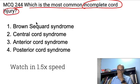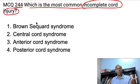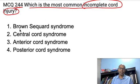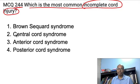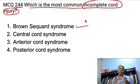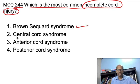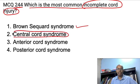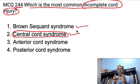We all know about complete cord injuries — complete transection with complete loss of sensation, quadriplegia if it affects the cervical spine, or paraplegia if it affects the thoracic spine. The question asks: what is the most common incomplete cord injury? A lot of people got this wrong — it is not Brown-Séquard syndrome. The most common incomplete cord injury is central cord syndrome.